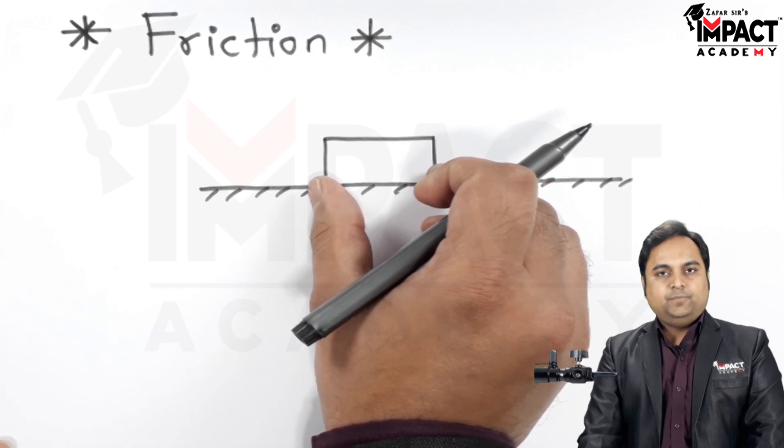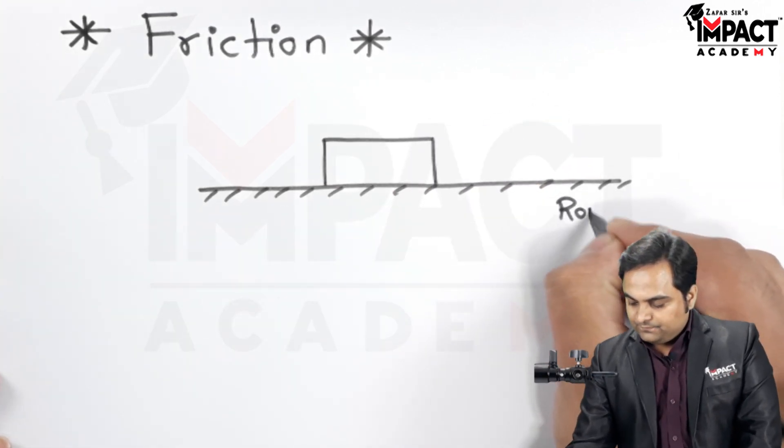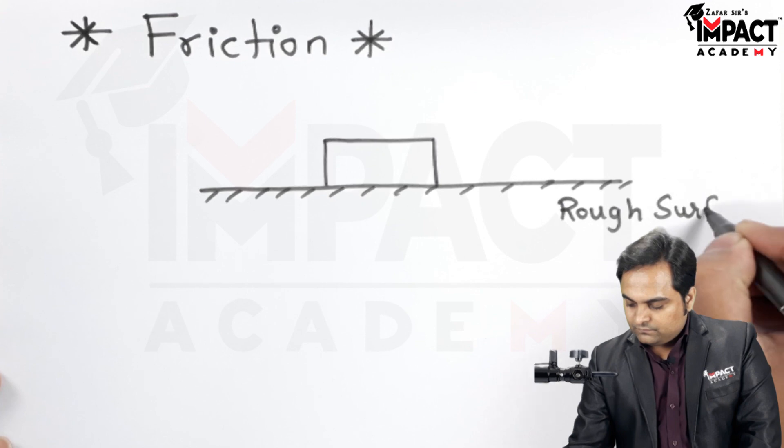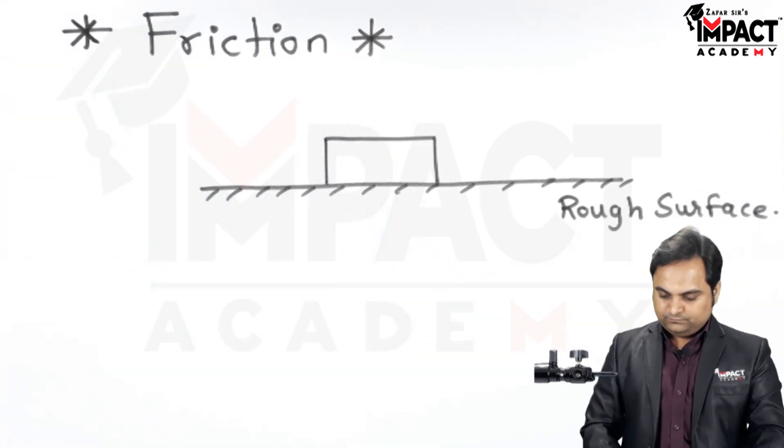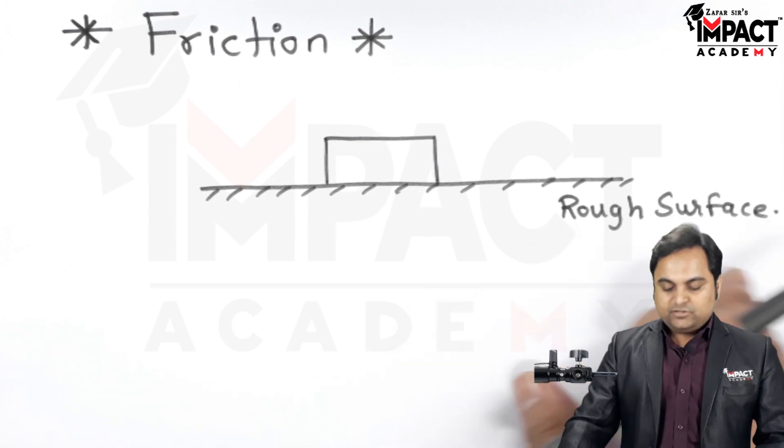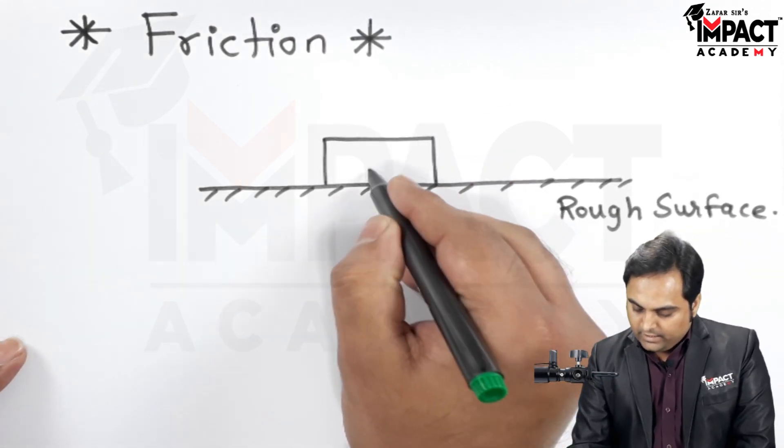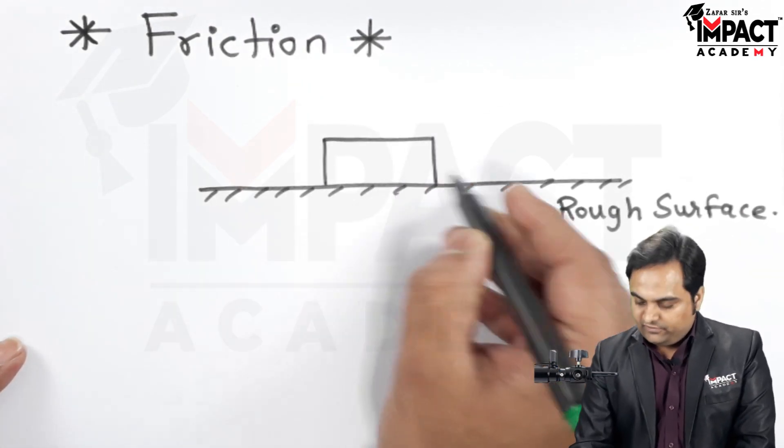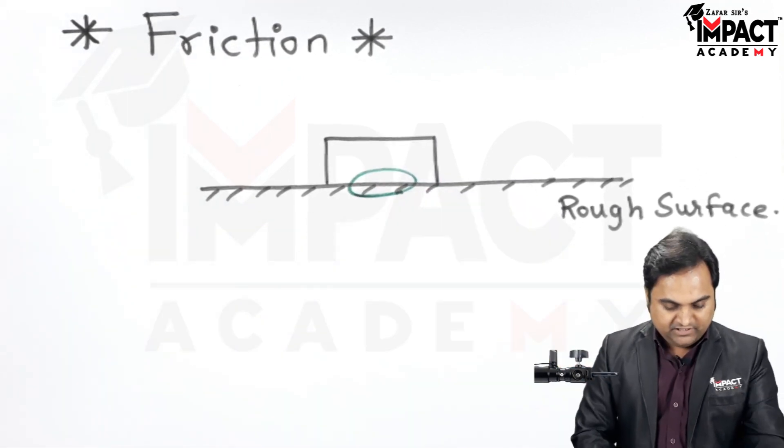Here, there is a block which is kept on a rough surface and when we look at this block and the contact between the surface at a microscopic level.